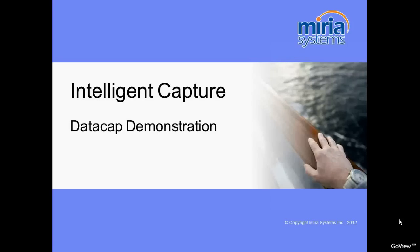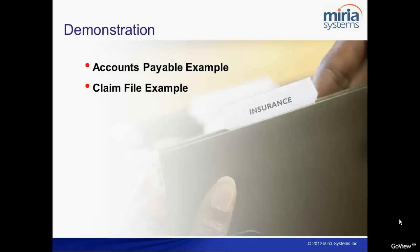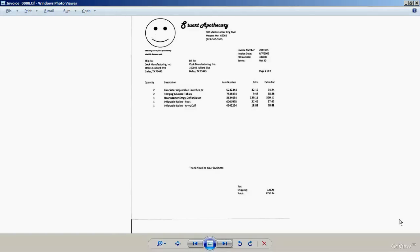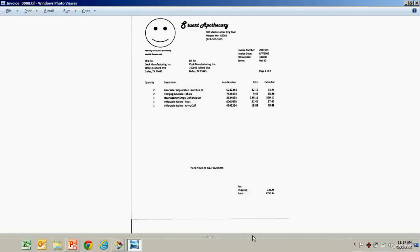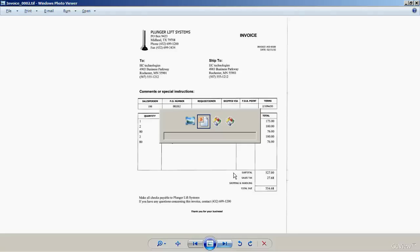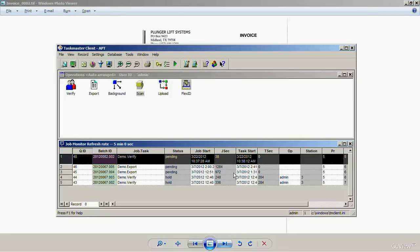I'd like to show you a quick demonstration. The first example will be how to process invoices using the Accounts Payable module. The second demonstration will show how to process a claim file that includes different document types. Here are examples of the invoices we're going to scan in and process — DataCap Taskmaster will automatically scan in this information and process it.